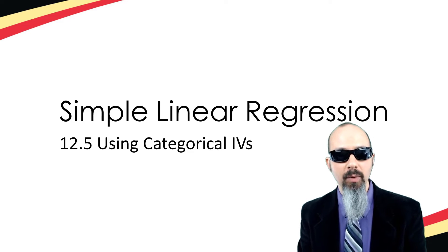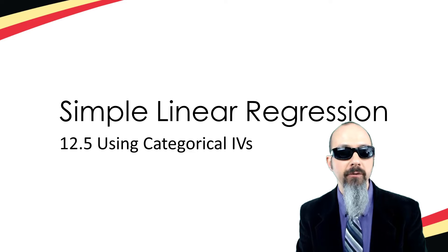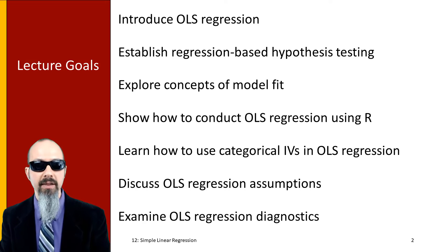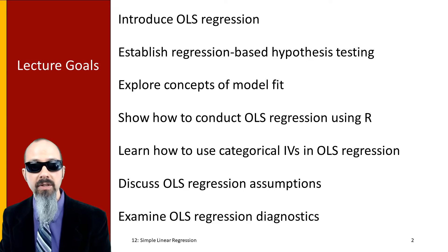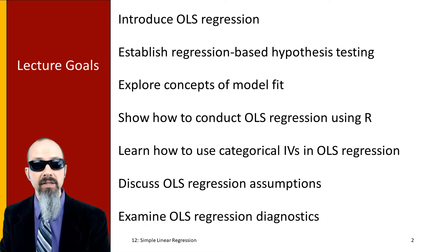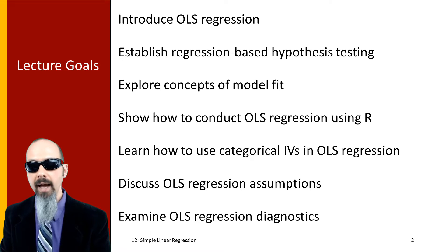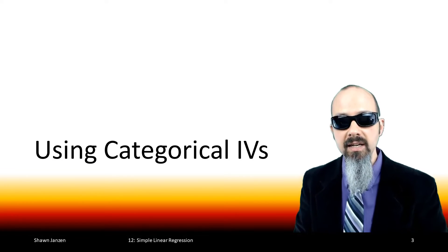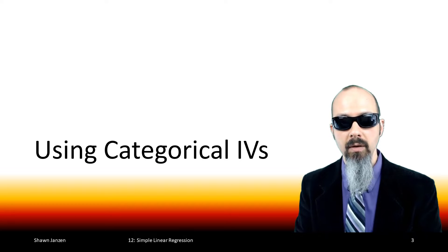Hey data junkies, welcome back. We are moving along on our module for simple linear regression, and we've already covered a lot of ground on how to think about these foundationally, looking at model performance, talking about how we can do them in R, and I gave you many different examples on how we can interpret and read these regression outputs. Now we're going to tack in a slightly different direction and continue working on simple regression, but instead of having a continuous independent variable, we are looking at categorical independent variables.